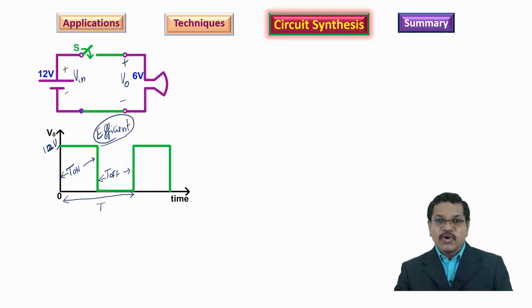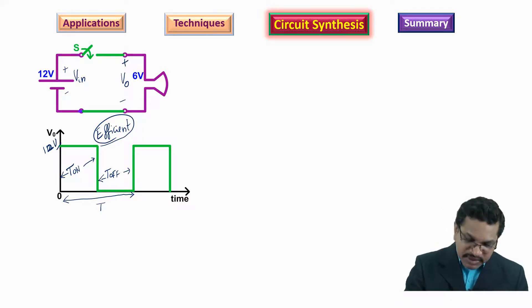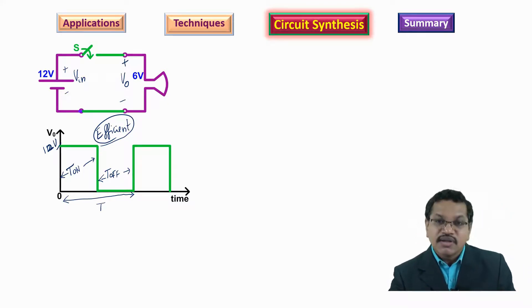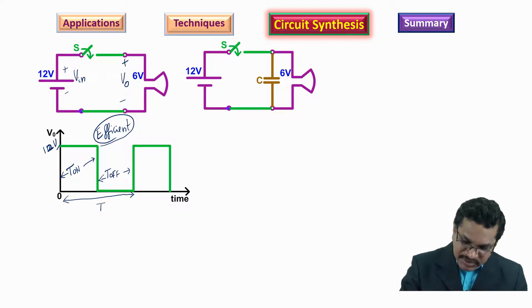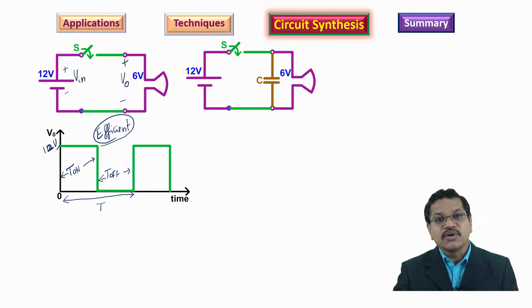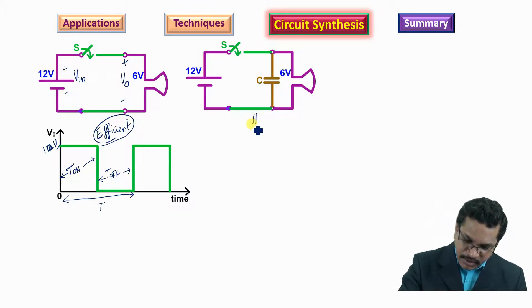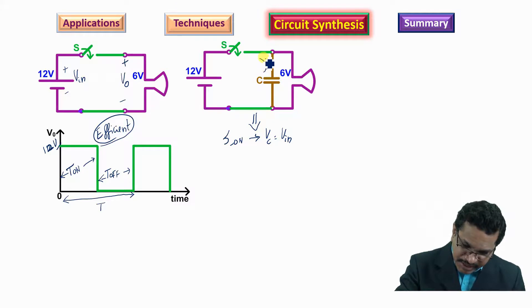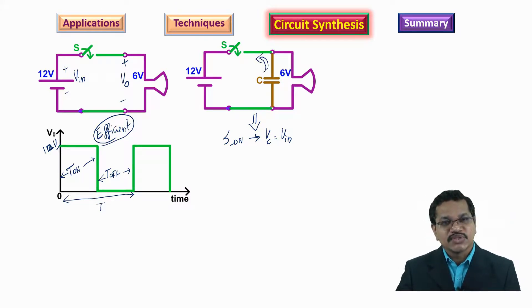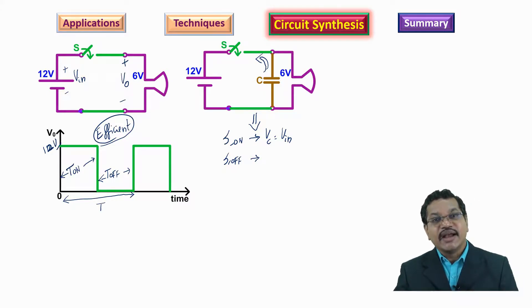However, this circuit may not work as intended because the load needs a constant DC voltage, whereas we are producing a chopped DC voltage that has to be filtered. The straightforward approach is to include a capacitor in parallel with the load so it filters out all the ripples, giving a constant voltage across the load. But when the switch turns on and off, the voltage across the capacitor tries to change suddenly, causing inrush currents that may damage the switch.